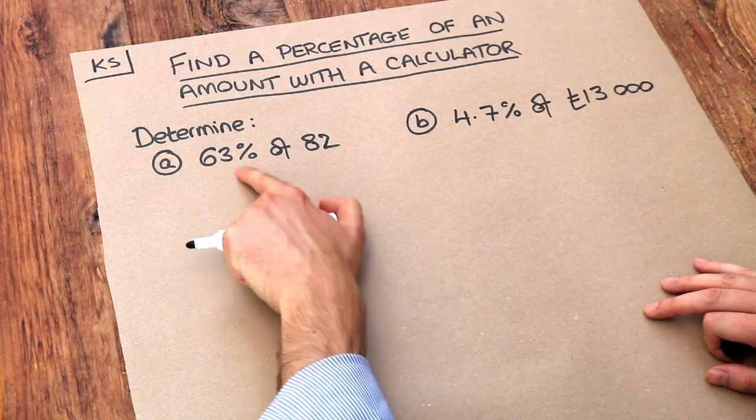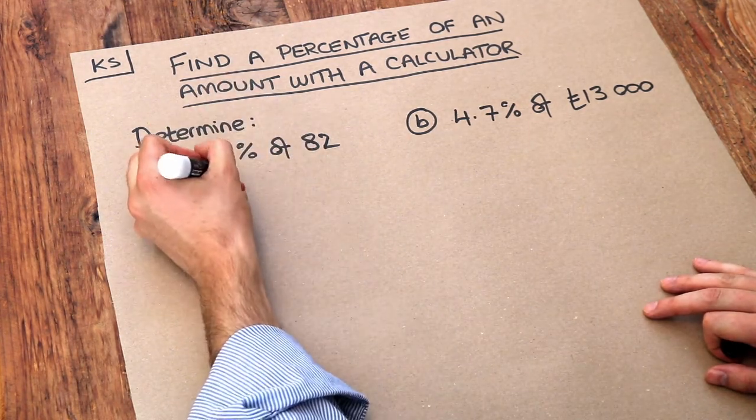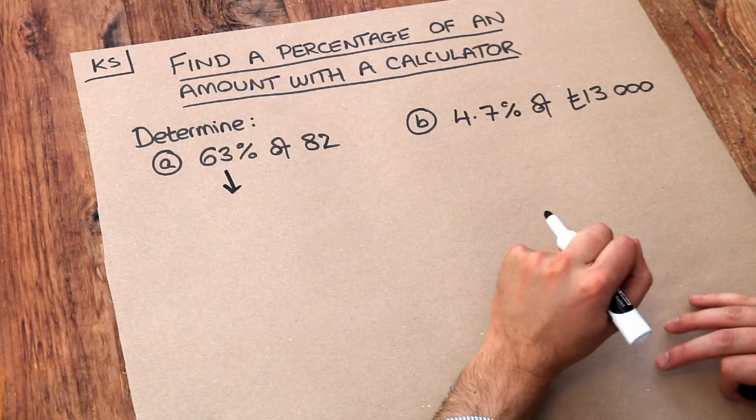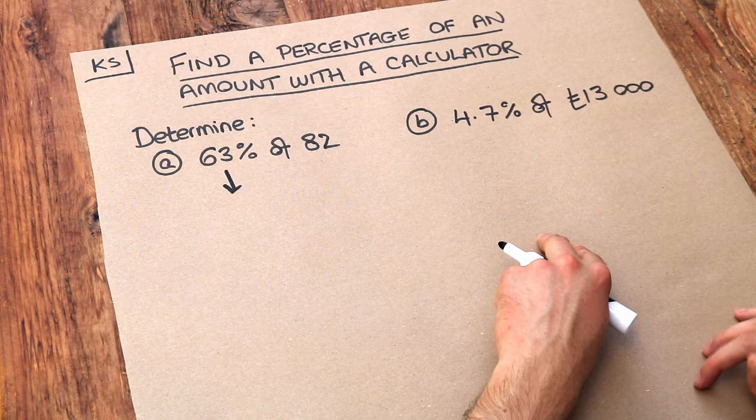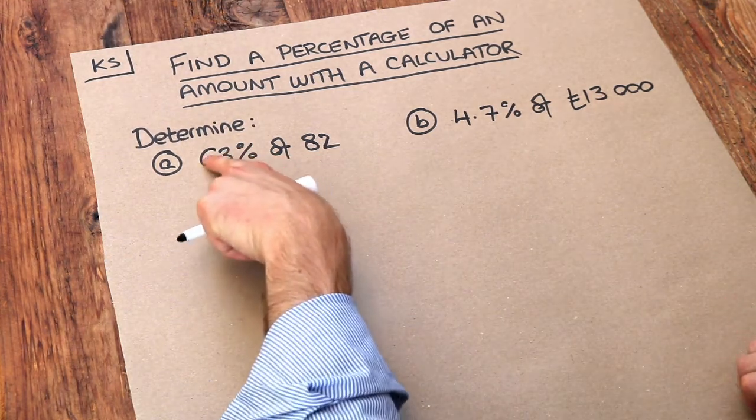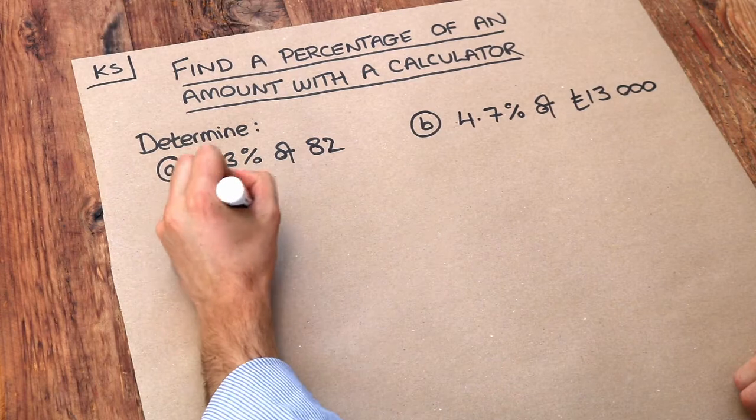Now the way we can do it is to just convert this percentage into a decimal. If you can't remember how to do that, I have another video on that. But basically we just divide that value by 100. So 63 divided by 100 is 0.63.